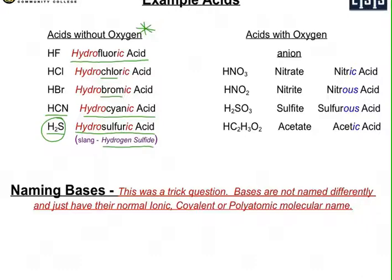Now if we go to acids with oxygen, I listed the anions to help out. HNO3, the anion here is nitrate, so it ends in A-T-E. So the acid is called nitric acid. HNO2, now you have the nitrite anion, so it's nitrous acid.